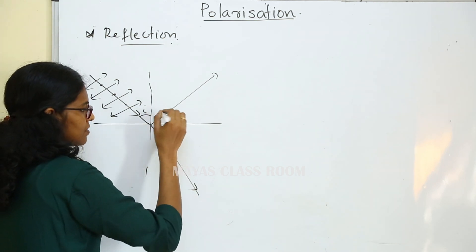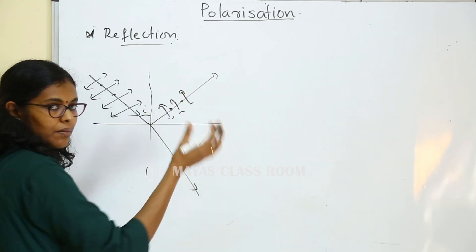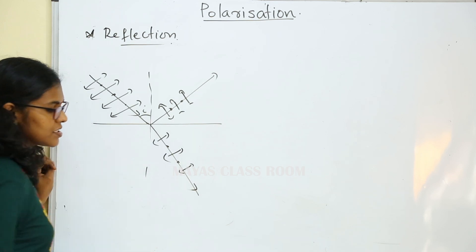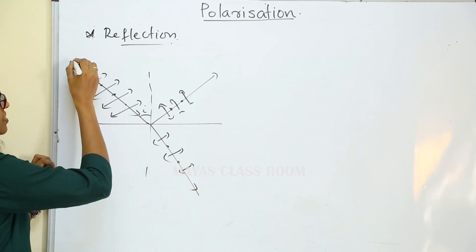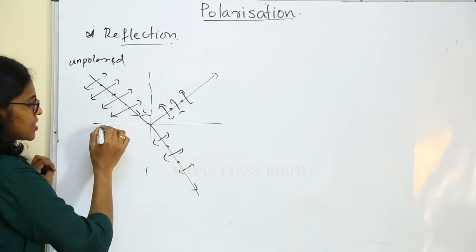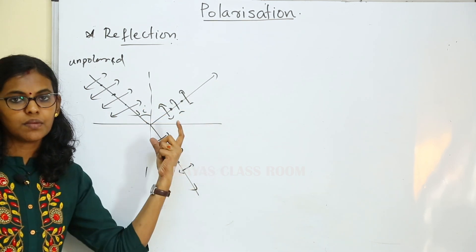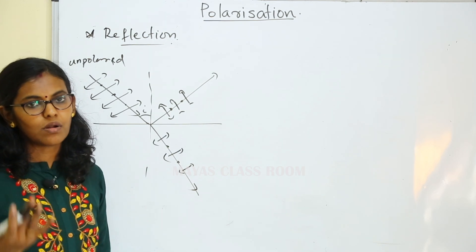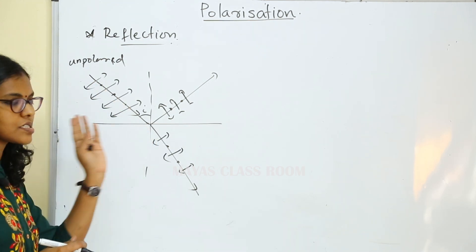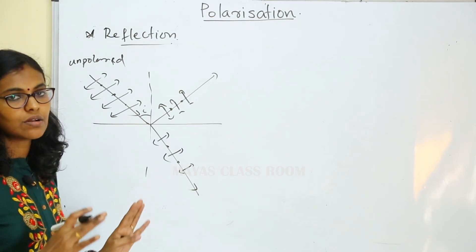The refracted ray is not completely polarized light. We make an unpolarized light incident on a transparent material. Now, if we change the angle of incidence, we change the angle of incidence.